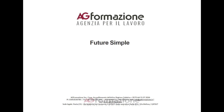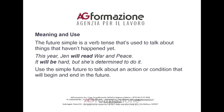Future simple: meaning and use. The future simple is a verb tense that's used to talk about things that haven't happened yet. This year, Jen will read War and Peace. It will be hard, but she's determined to do it. Use the simple future to talk about an action or condition that will begin and end in the future.